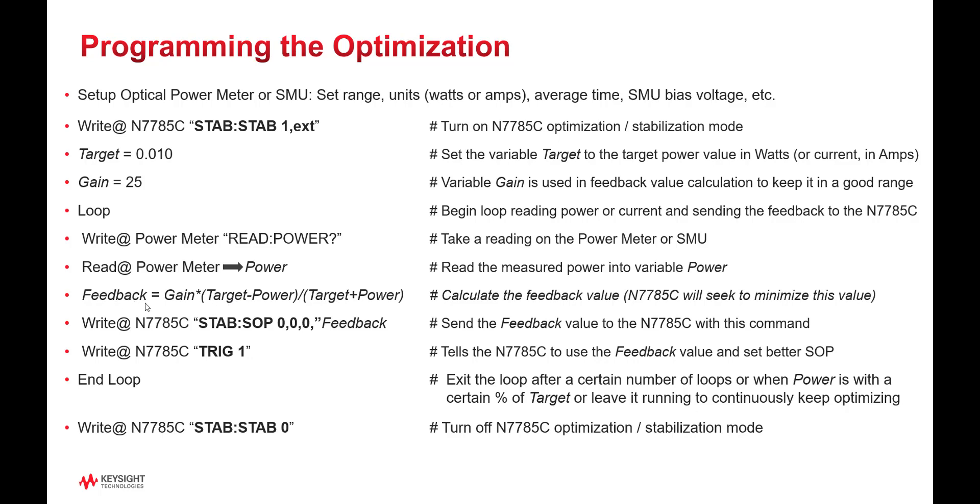If the feedback value compared to the previous one gets larger, that would mean that the measured value is getting further, has gotten further away from the target. It's going in the wrong direction. It will try a different direction.